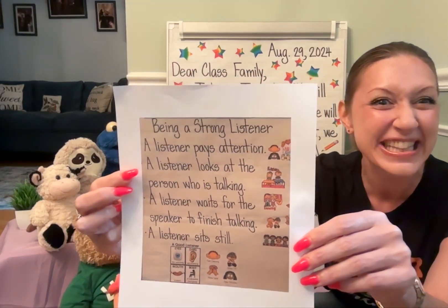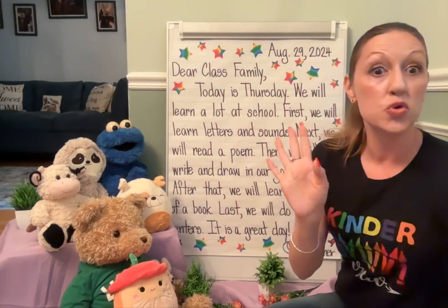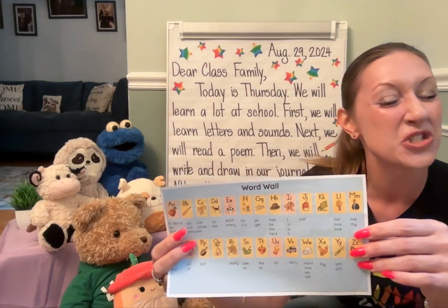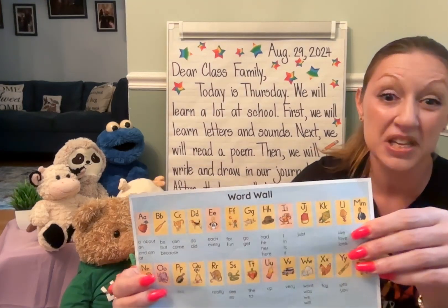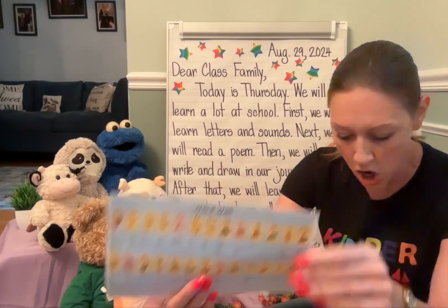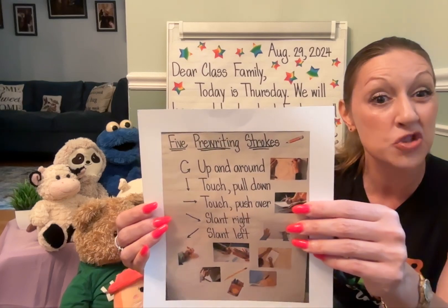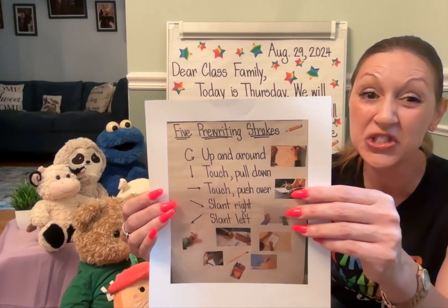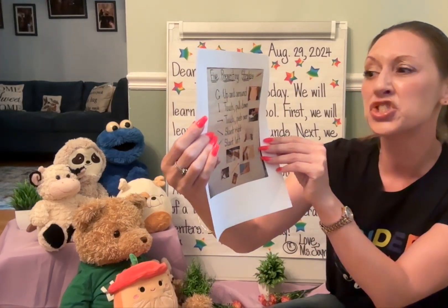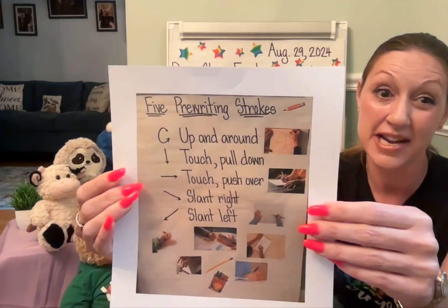We're going to be strong listeners. First, we will learn letters and sounds. We use so many resources — our word wall to review letters, sounds, pictures to match, and American Sign Language. We have the kindergarten fast words you need to know, read, and spell to get ready for first grade. We're also going to do the five pre-writing strokes — used when writing letters, drawing pictures, and writing numbers. Remember: up and around, touch, pull down, touch, push over, slant right, slant left.